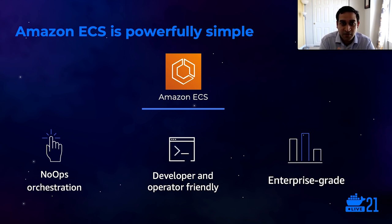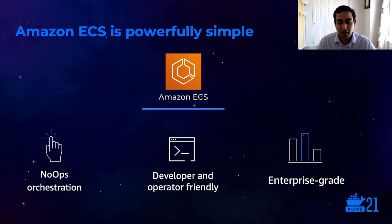ECS delivers a powerfully simple solution that works for a vast majority of enterprises out there. ECS lets your developers move up the stack and focus on the work that is critical to your business. We do this by being fully managed — there is no control plane for developers to manage, AWS manages it for you. We do this by being easy to learn: if you know AWS and the Amazon APIs, you know ECS. We have Amazon AWS native authentication, networking and storage, and great integrations with many other AWS services. We do this by being easy to adopt — there is a rich set of partners and tooling to help you bring the software you already know with you to ECS.